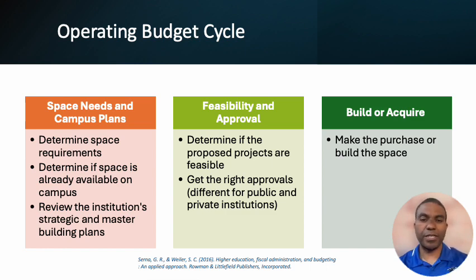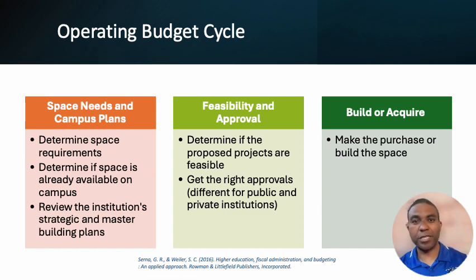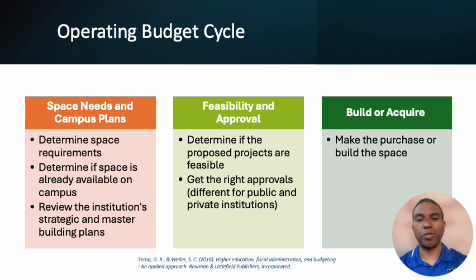The next phase is feasibility and approval. Here you're trying to figure out if the projects you're proposing are feasible — can you actually do them given the resources you have and the current market conditions? You also need to figure out what approvals are required. Public universities will have some state approvals, while private institutions won't. It just varies based on your institution.